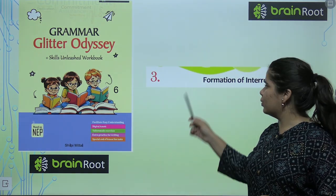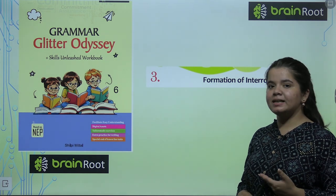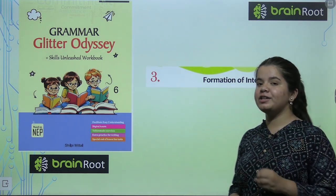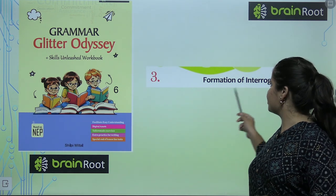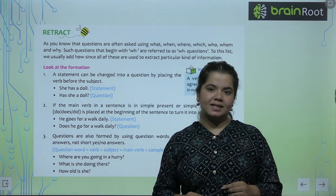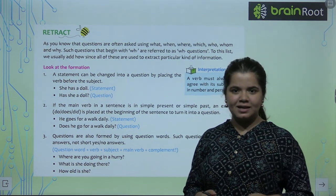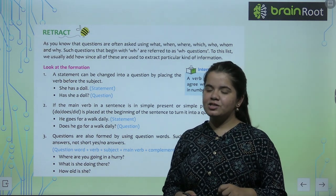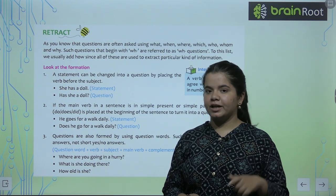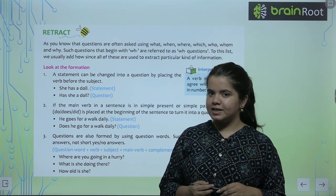Let's see what we have in chapter 3. Let's start with chapter 3 and see what the name of our chapter is — Formation and Interrogatives. Do you remember we read the first chapter? Those were sentences with a question mark — we call them interrogative sentences.